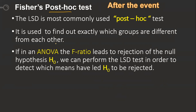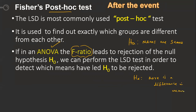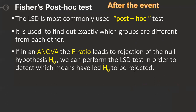If an ANOVA test uses an F ratio, whenever my F ratio leads to the rejection of the null hypothesis, I'm going to reject it. The null hypothesis H0 says means are same, and the alternative hypothesis HA says there is a difference in mean. Whenever I reject H0, I accept HA, so I say there is a difference in means. Then I want to find out in which mean the difference lies — that is when I use Fisher's post hoc test, the LSD. We can perform the LSD test in order to detect which means have led H0 to be rejected.